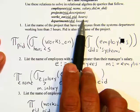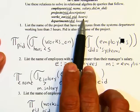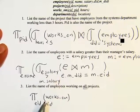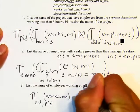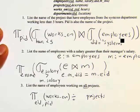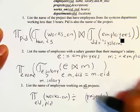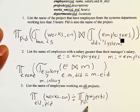We need to project works_on onto just (employee_id, project_id) — removing hours — because if we leave hours in, the division would require employees working the same number of hours on all projects, which is not what we want. We then divide this by a projection of projects onto PID. The PID attribute must match between both sides for the division to be compatible, and the result will give us employee IDs.